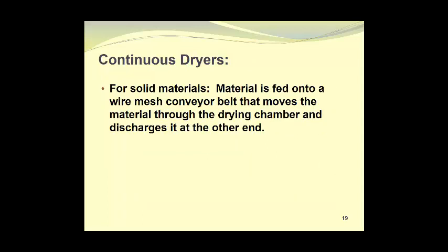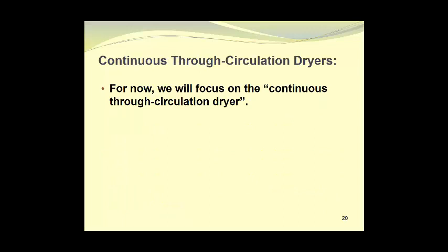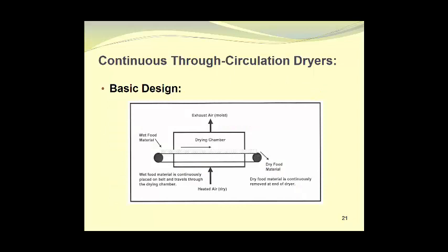Now let's take a look at continuous dryers. For solid materials, the material is fed onto a wire mesh conveyor belt that moves this material through the drying chamber and discharges it at the other end. For slurries or solutions, material is pumped into the drying chamber through a spray nozzle assembly into hot air and the dry product is separated from the hot air stream that conveys it. For now, we will focus on the continuous through-circulation dryer. We will use a series of diagrams to explain their operation. A full description is available online in the e-book, An Introduction to the Dehydration and Drying of Fruits and Vegetables, which was mentioned previously.